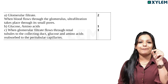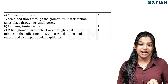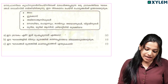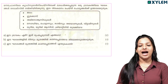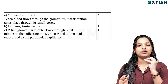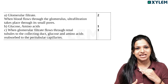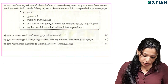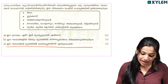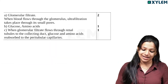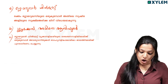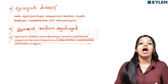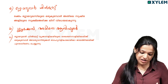Ultrafiltration filters the glomerulus on the capillary side. These components are filtered out. In the urine, glucose and amino acids will be reabsorbed. We use ultrafiltration and also use the renal tubules to reabsorb them.